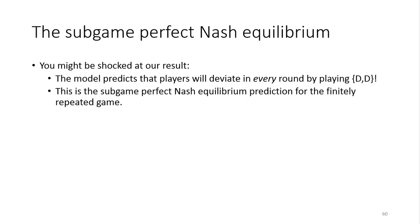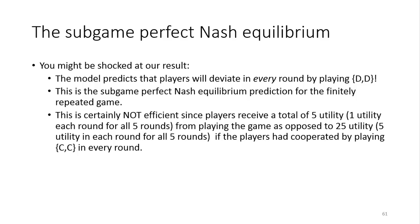This is the subgame perfect Nash equilibrium prediction when we repeat the prisoner's dilemma a finite number of times. And this is certainly not efficient. If I play for five rounds and get one utility each round, I've collected only five utility. But if we had cooperated each round, we would have gotten five utility each round over five rounds — accumulating 25 utility total. So certainly not efficient.